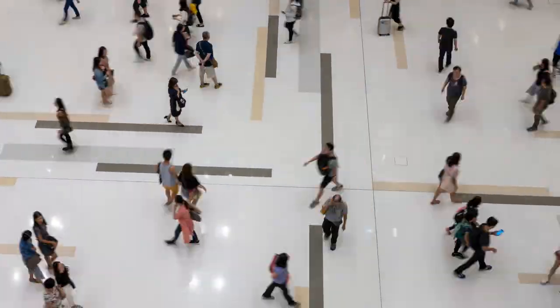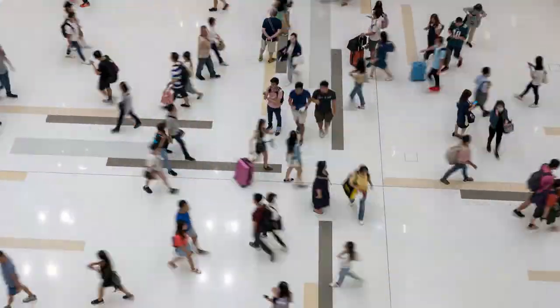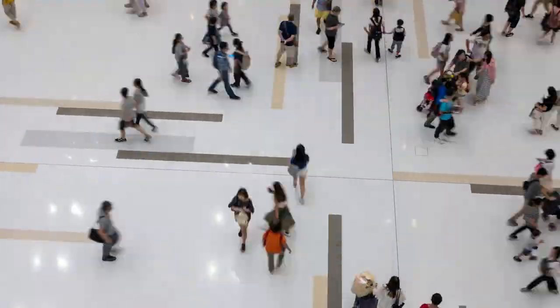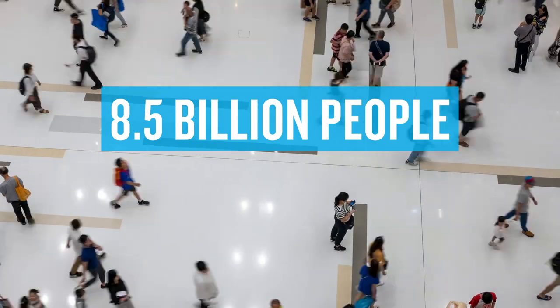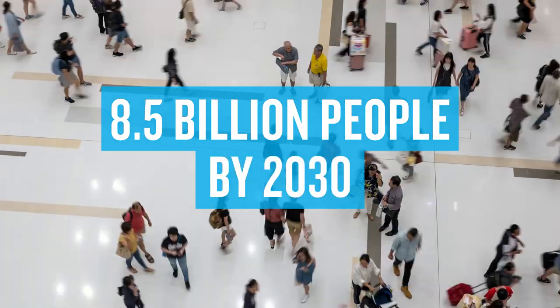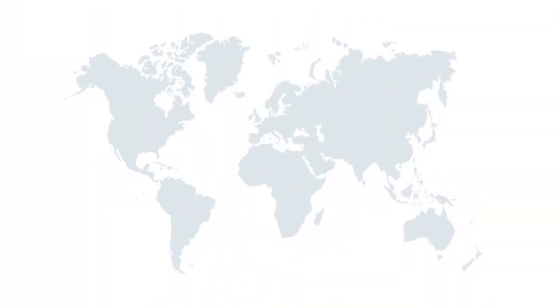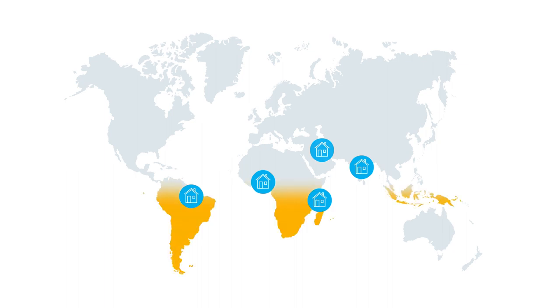Did you know that the world's population is expected to hit 8.5 billion people by 2030? By 2050, 5 billion people will live in urban areas in developing countries.